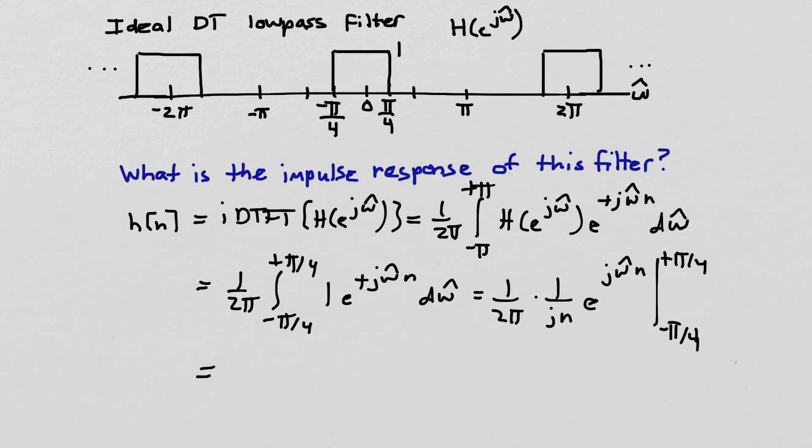So if we do that, that's pretty straightforward. We can write this as 1 over πn times 2j, just rearranging that a little bit, times e^(+j(π/4)n) minus e^(-j(π/4)n).